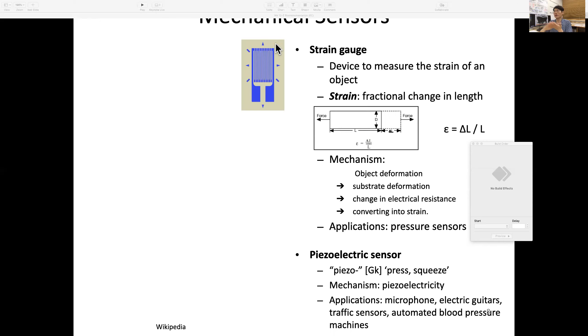This is on a thin film—these are resistance elements. Usually, in this case, it measures up-and-down strains. Deformation of the object gives substrate deformation, which results in changes in electrical resistance. You can convert that resistance change into strain. Let me give you an example: pressure sensors, like electric guitars.